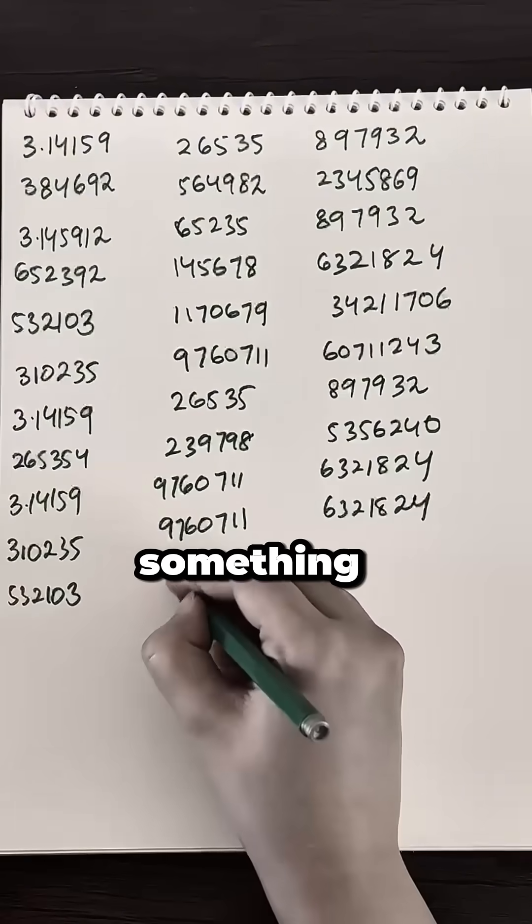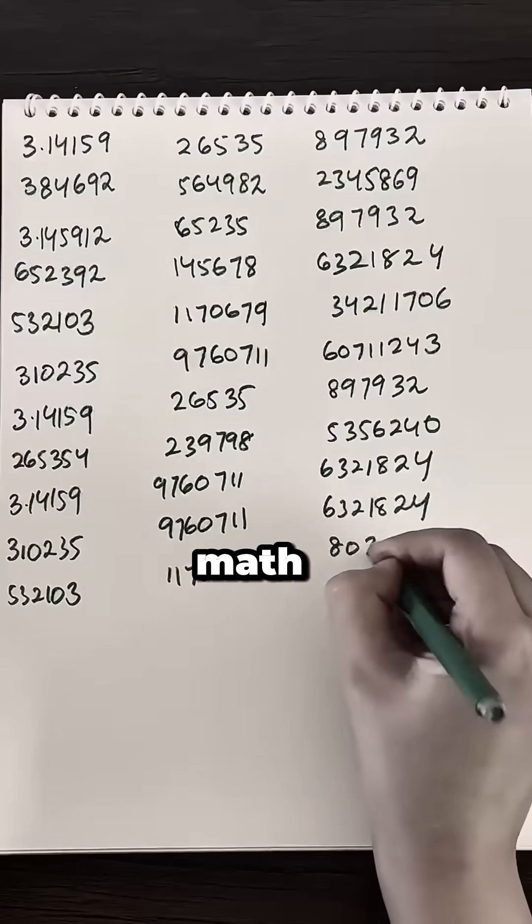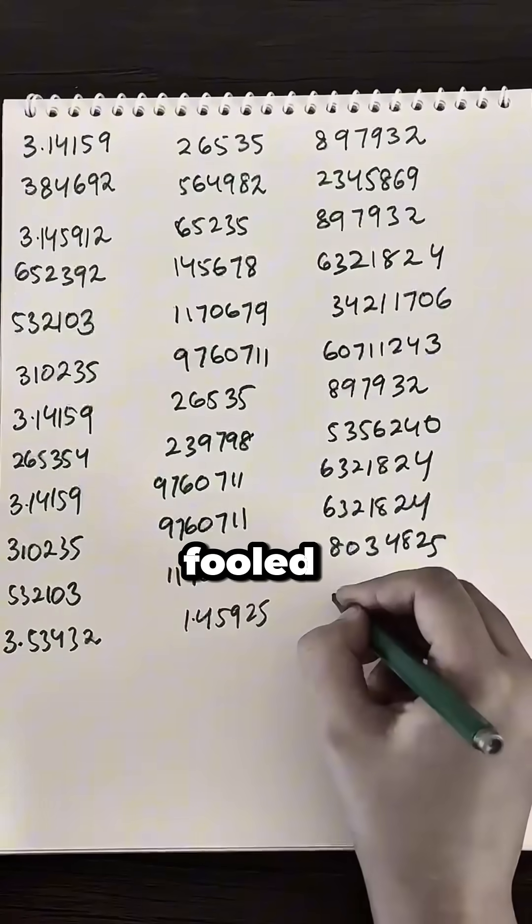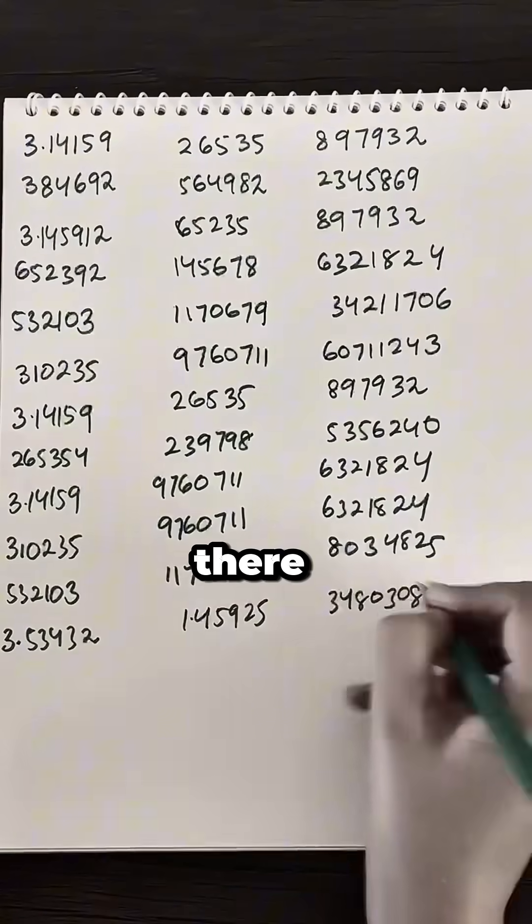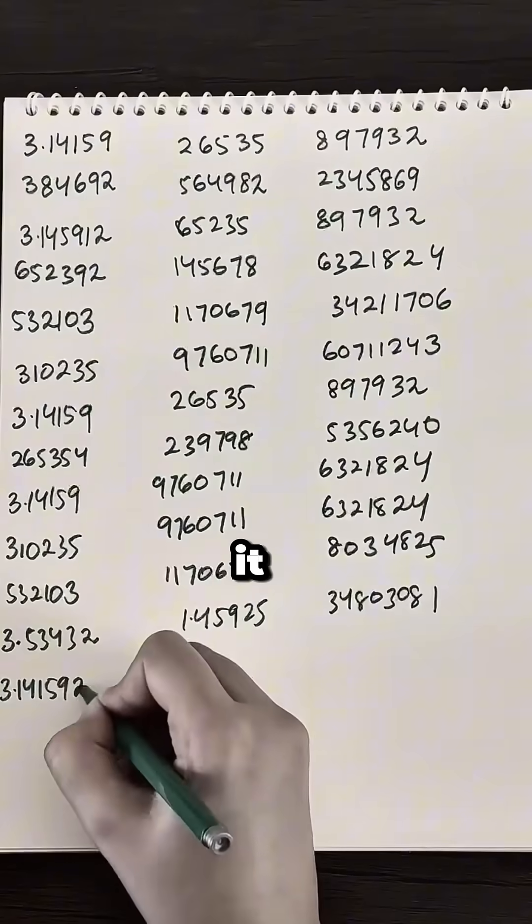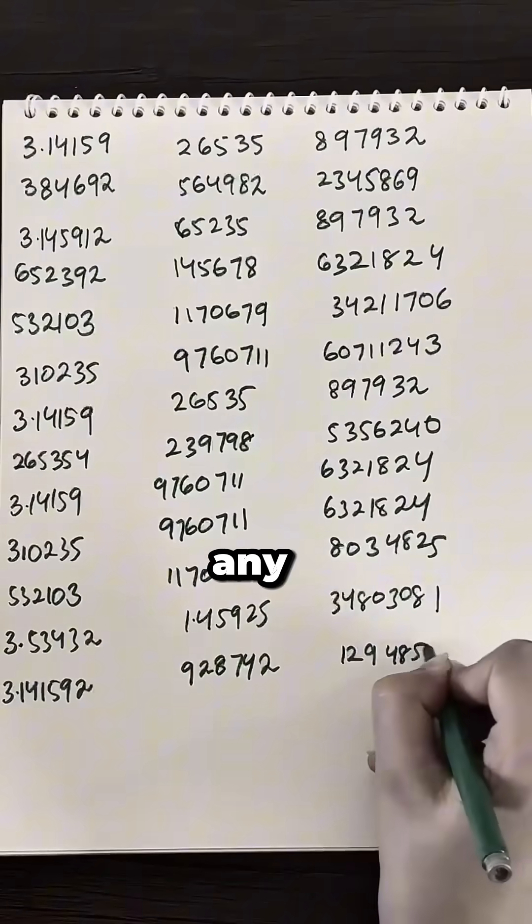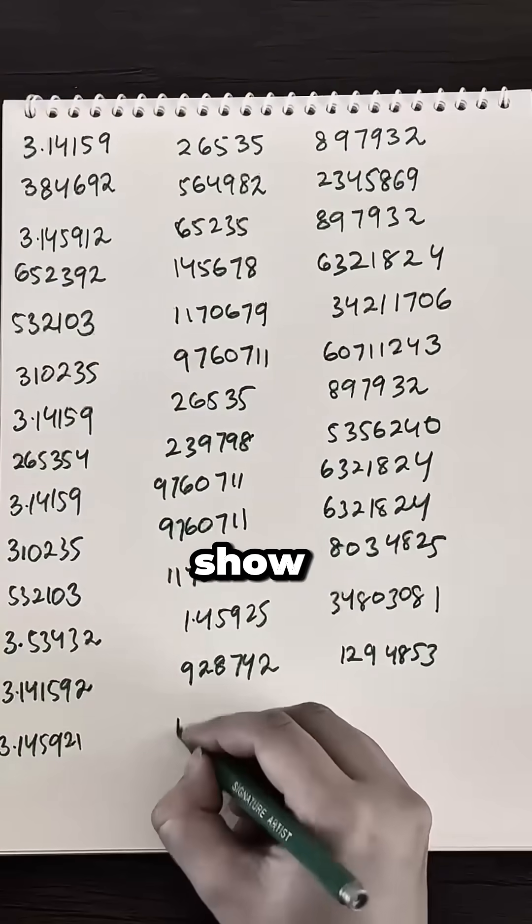But it also highlights something really cool about math. Even in total randomness, our brains are wired to look for patterns. But don't be fooled. Pi doesn't actually stop there, not even close. It continues endlessly, unpredictably, without any true pattern. And yet moments like this still show up.